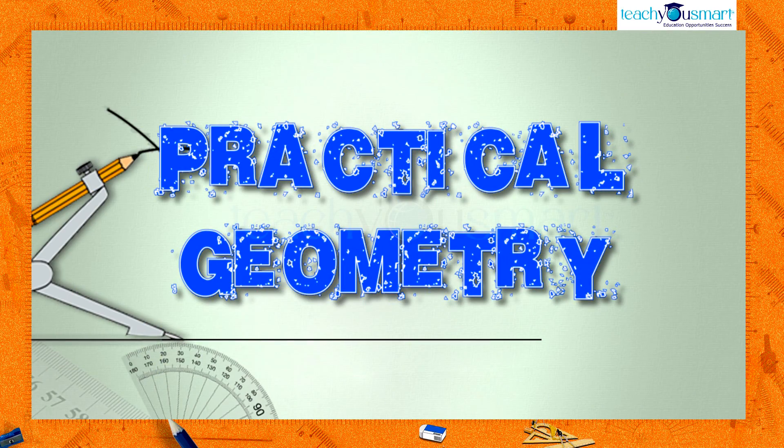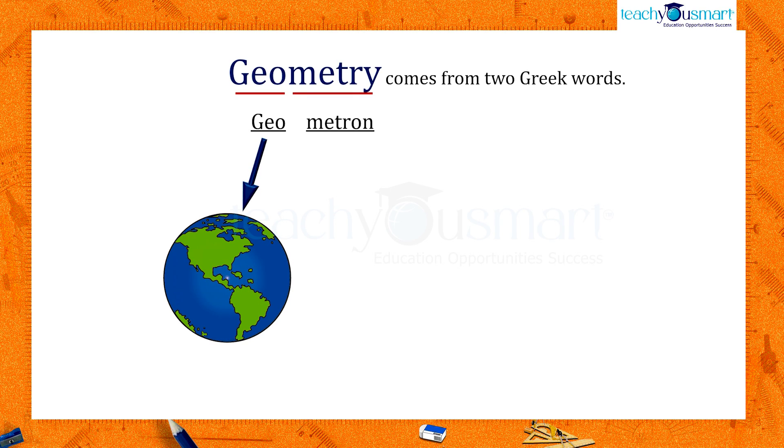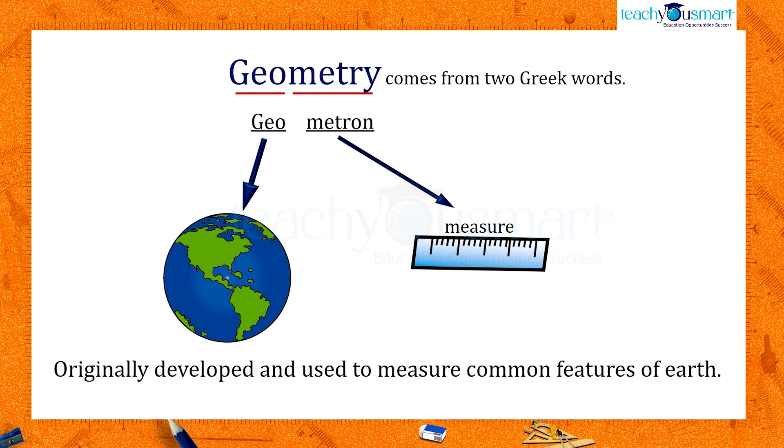We are familiar with the term geometry. Geometry comes from two Greek words, geo and metron. Geo means earth and metron means measure. That is, geometry is a branch of mathematics, originally developed and used to measure common features of earth.